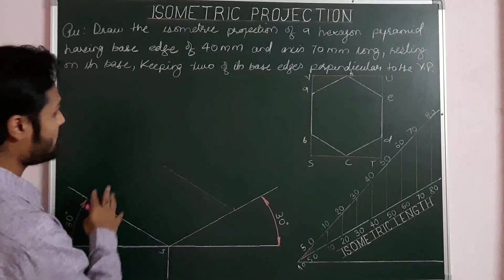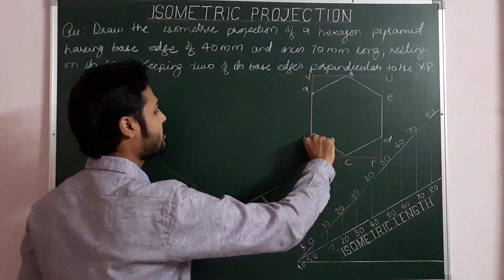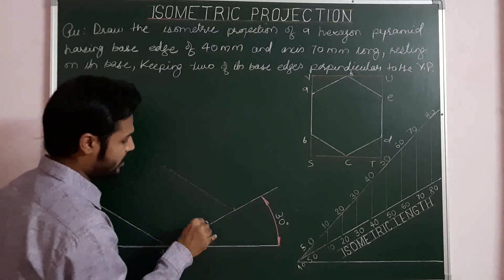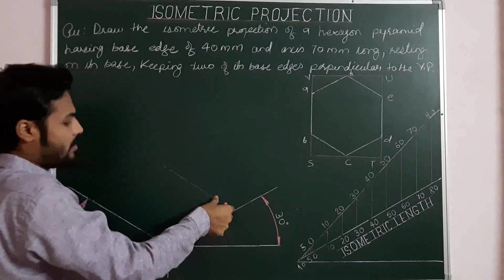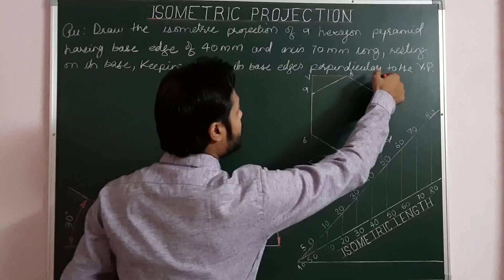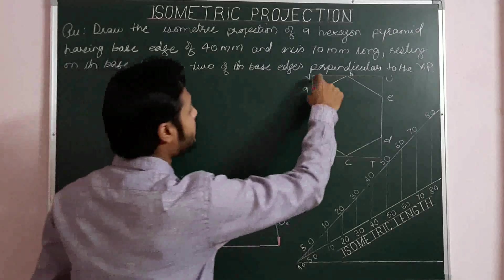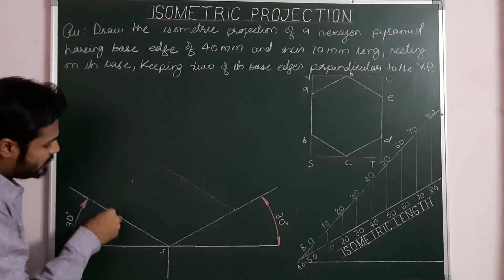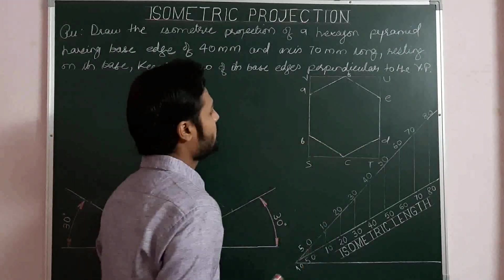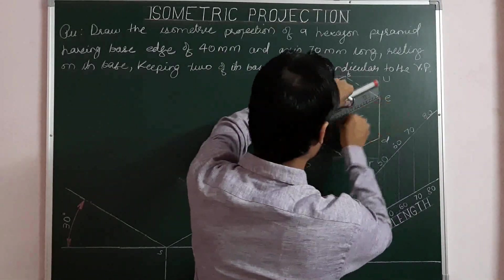Again, we have to mark all six corners of the hexagon by taking distances from S, T, U, and V. So we mark: S to C gives point C; S to C, then T to D gives point D; D to E along the line gives point E; then from U to E, U to F gives point F; and V to E gives point E. So these are the six corners of the hexagon. Next, we have to find the center of the hexagon by joining opposite corners — the common intersection point will be the center.